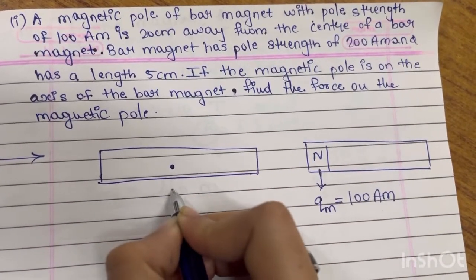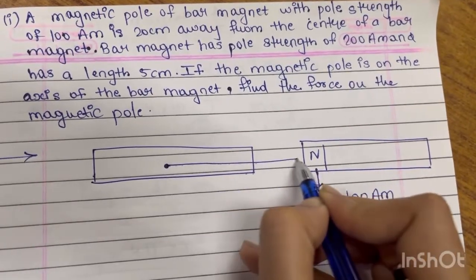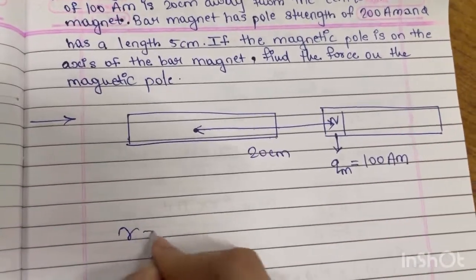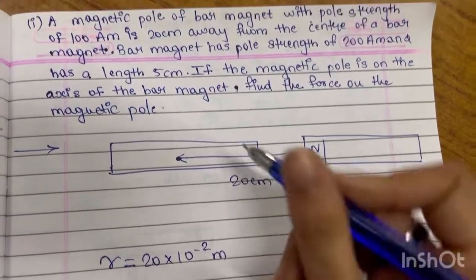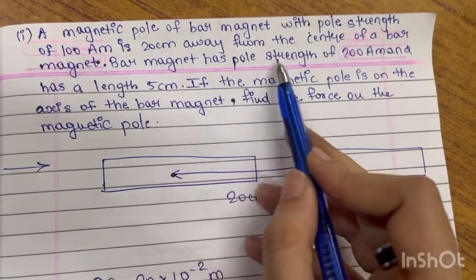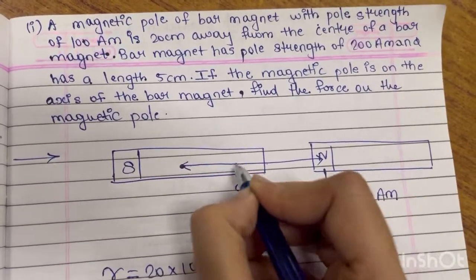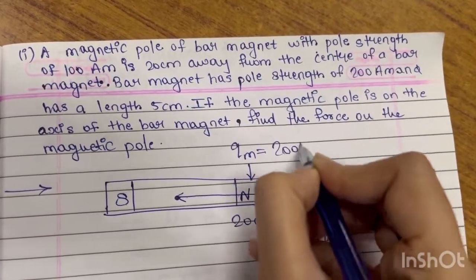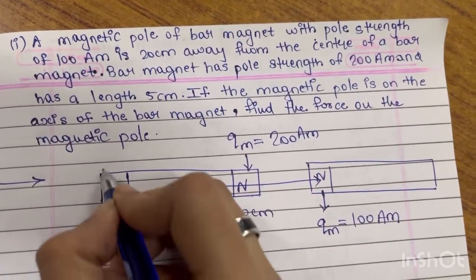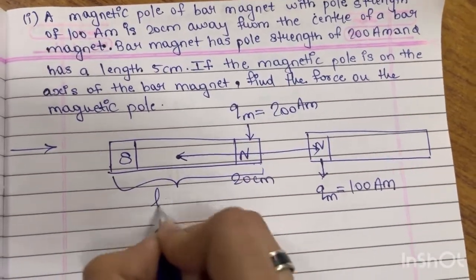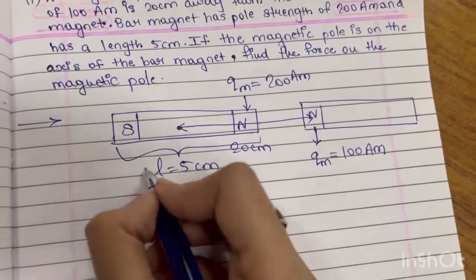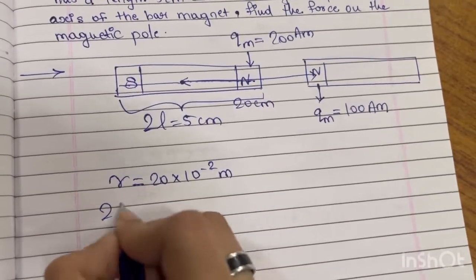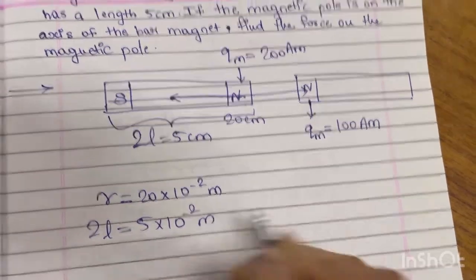This is the center of my another bar magnet. From here to here the distance is 20 centimeter, that is r = 20 × 10⁻² meter. This bar magnet has south and north poles, pole strength 200 ampere meter, and length 5 centimeter. Its length is 5 centimeter, and 2L = 5 × 10⁻² meter.